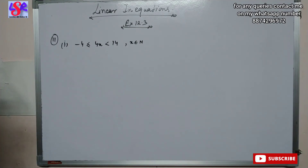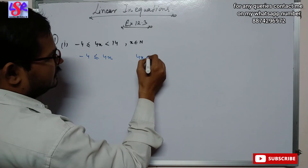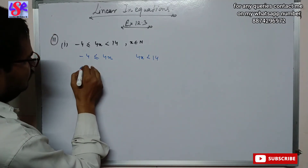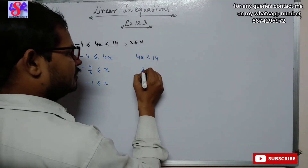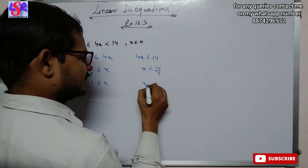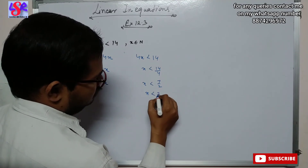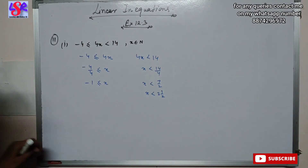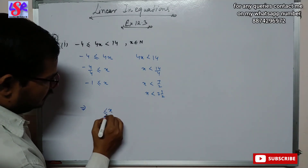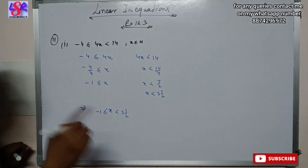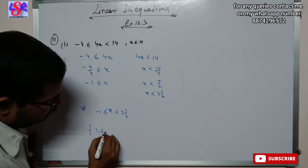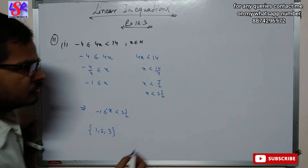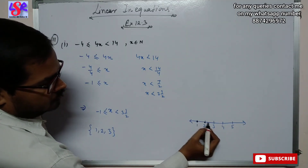Now let's move to question number 11. Here we have two inequality signs in the same equation, so we split into two parts: minus 4 is less than or equal to 4x, and 4x is less than 14. Solving: minus 4 upon 4 is less than or equal to x, giving minus 1 is less than or equal to x. And x is less than 14 upon 4, that is x is less than 3 and 1/2. Combining: x is greater than or equal to minus 1 but less than 3 and 1/2. As x is a natural number, the answer is 1, 2 and 3, and on the number line these are plotted.